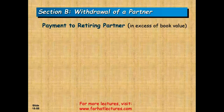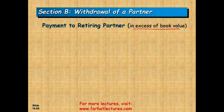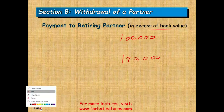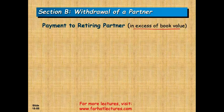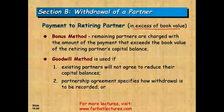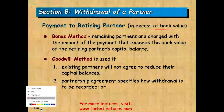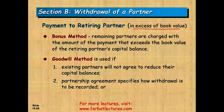Let's talk about when the payment to a retiring partner is in excess of their book value. Simply put, the partner has a $100,000 balance and we're going to give them $120,000. So we're paying them in excess of their book value — in excess of what they have in their capital account on the books. We're going to use the two methods discussed earlier for admitting a partner: the bonus method and the goodwill method.